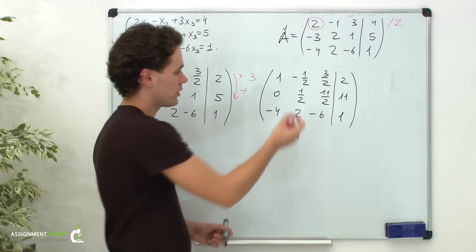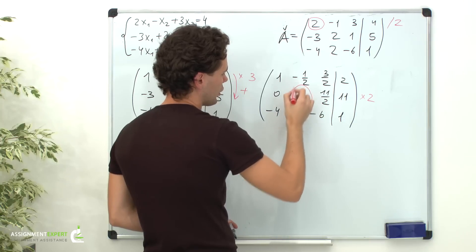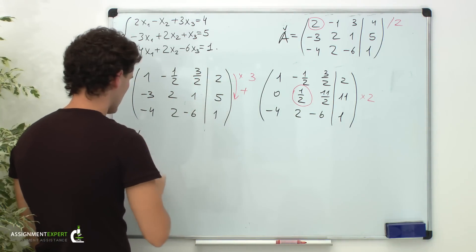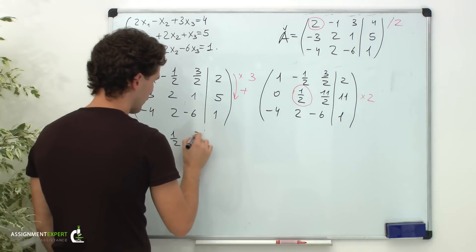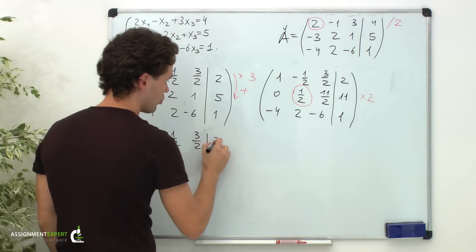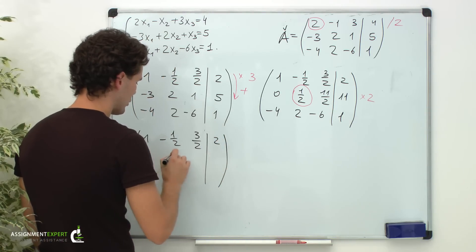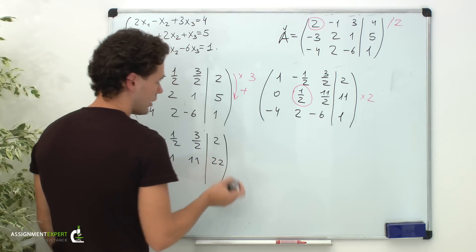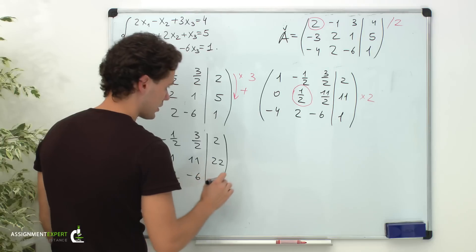Now, we will multiply the second row by 2 to obtain 1 on the main diagonal. So, the first row is 1, negative 1 half, 3 halves, and 2. Second row multiplied by 2 is 0, 1, 11, and 22. And the third row is negative 4, 2, negative 6, and 1.